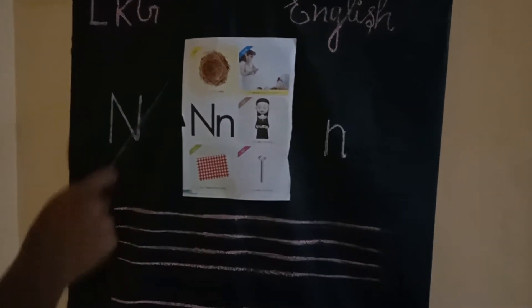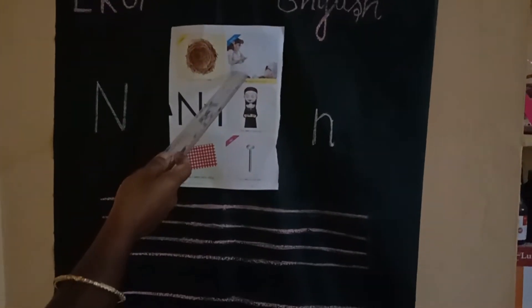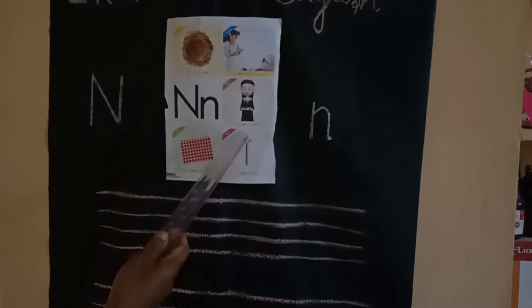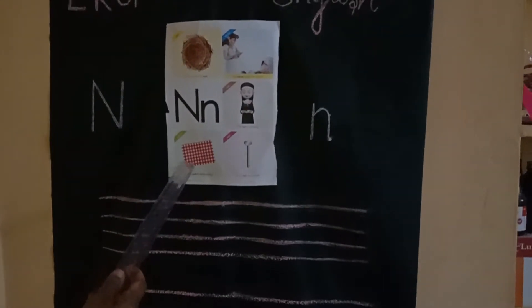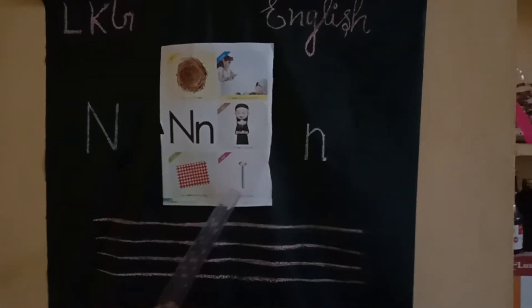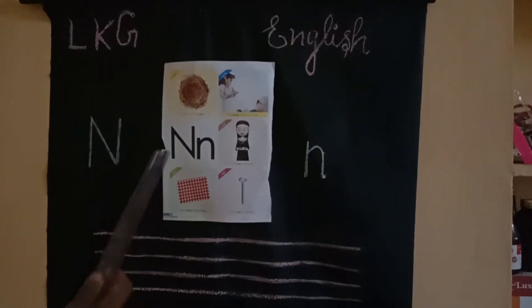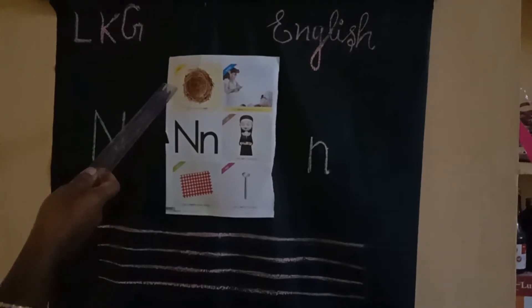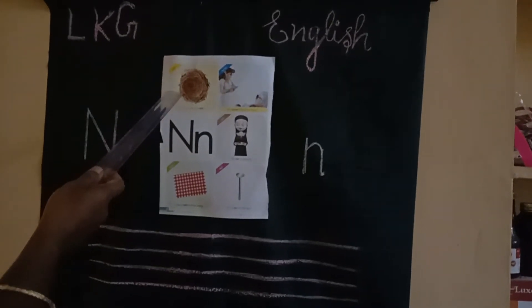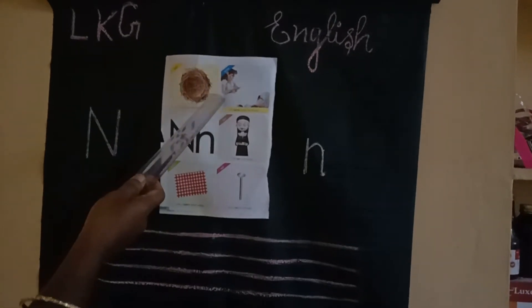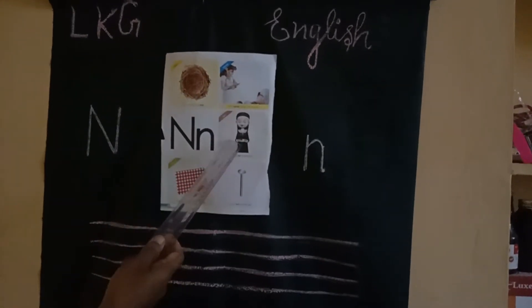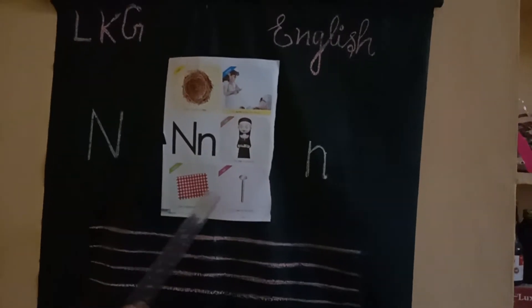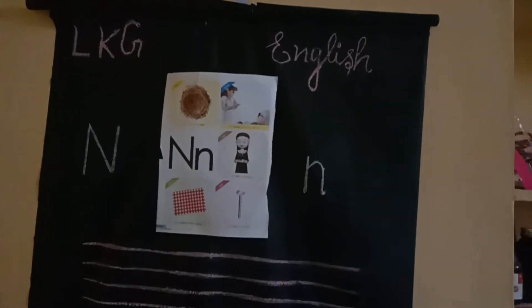Children, look at the picture. Nest, nurse, nun, napkin, knife. Okay children, once again listen here: nest, nurse, nun, napkin, knife.